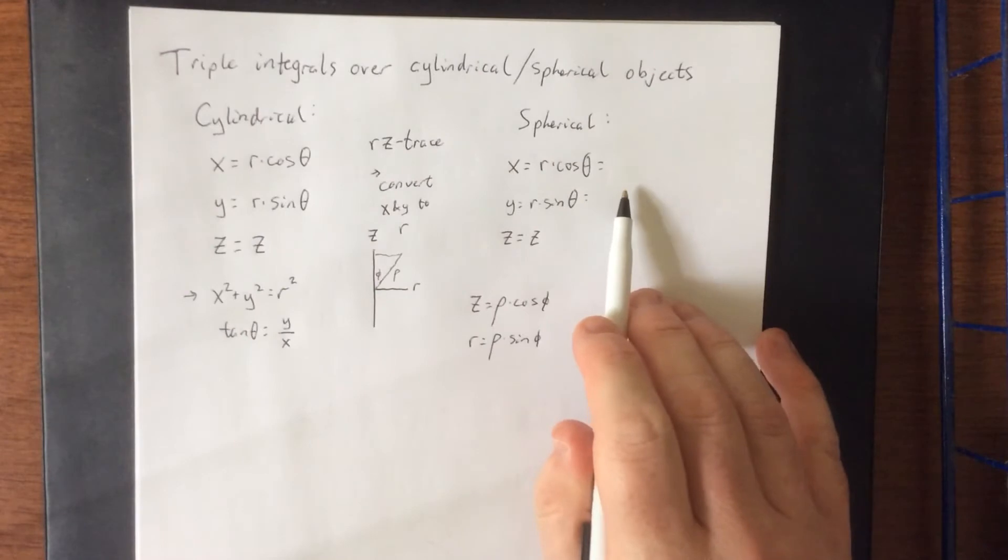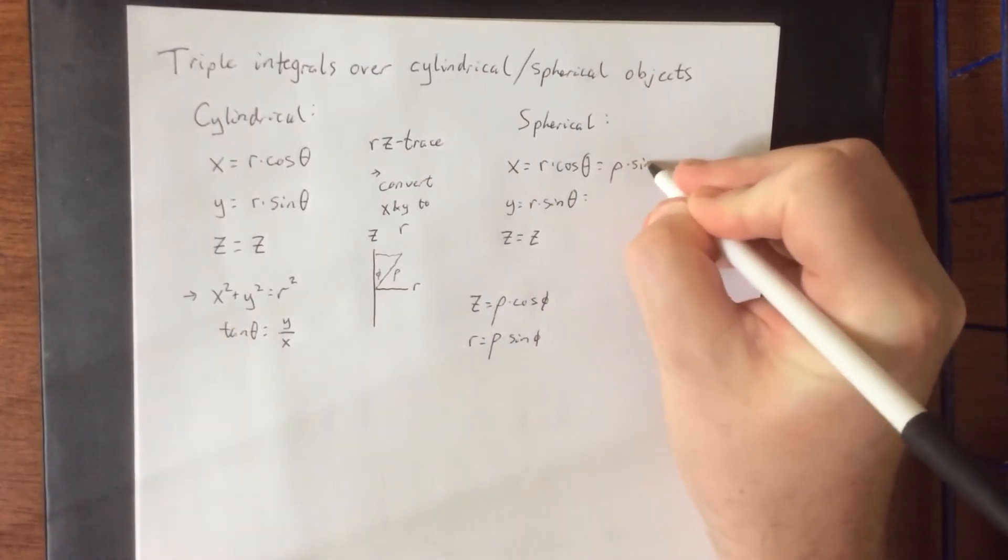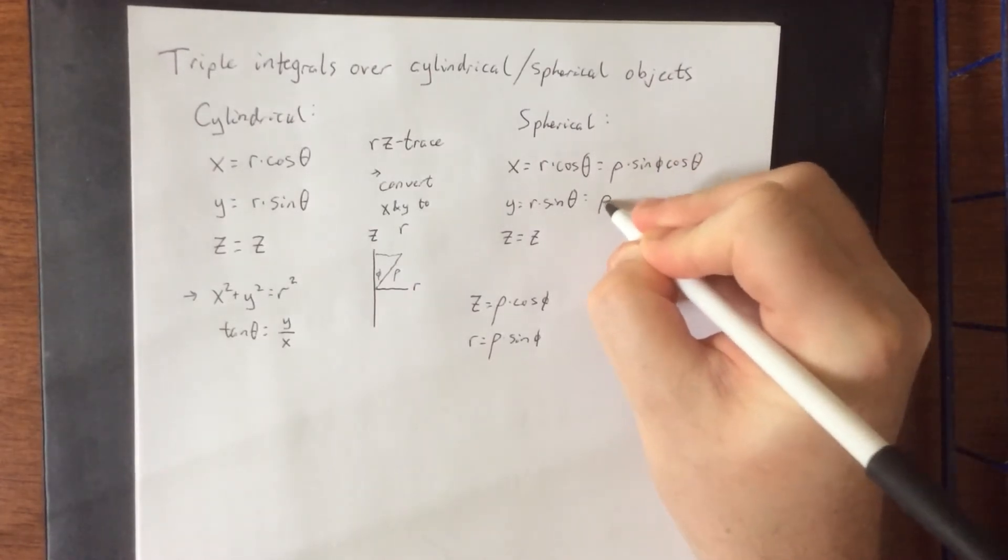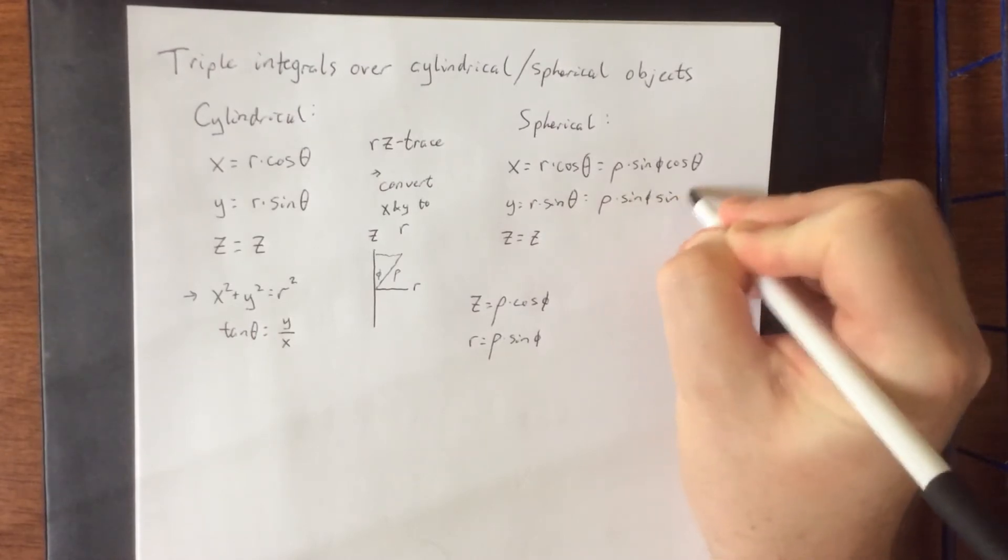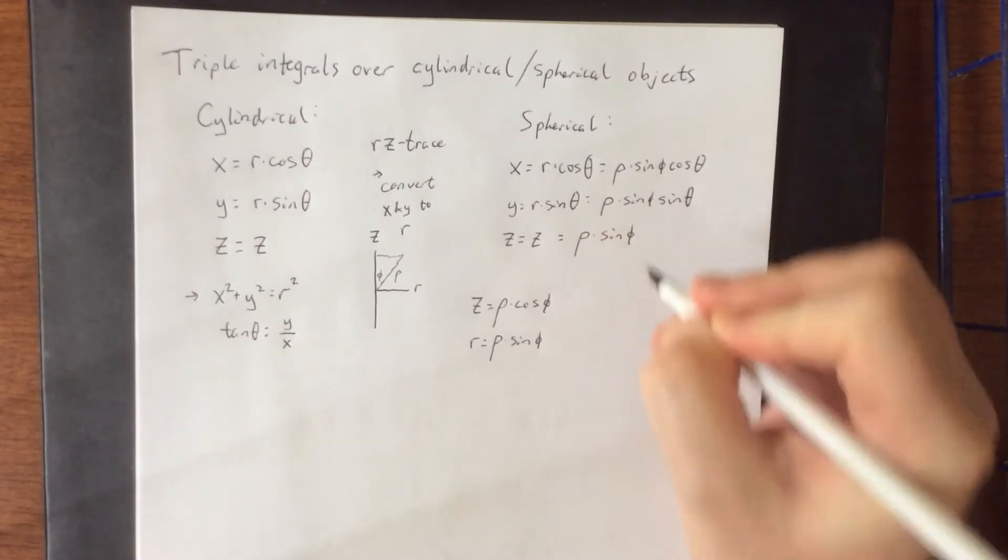Making these substitutions, we get the following conversions from Cartesian into spherical. This would be rho times the sine of phi times the cosine of theta. Y would be rho times the sine of phi times the sine of theta, and z would be equal to rho times the sine of phi.